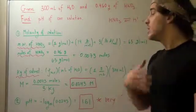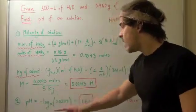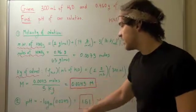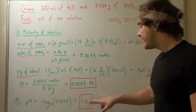And finally, we use our pH formula, which states pH equals negative log base 10 of 0.0243, our molarity. Plug that into our calculator, and we get 1.61.